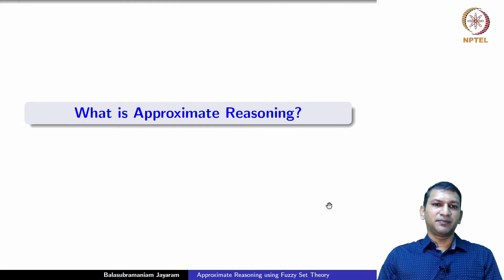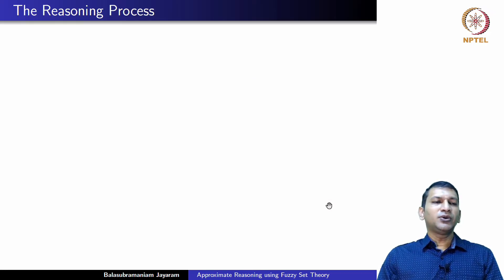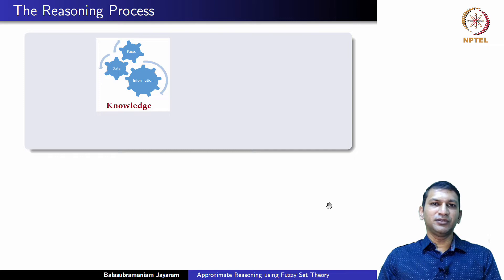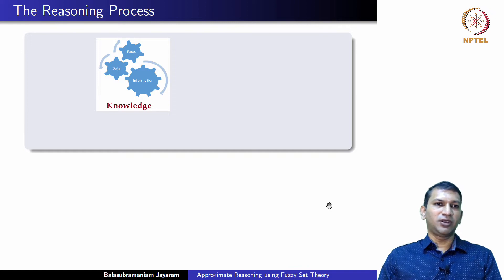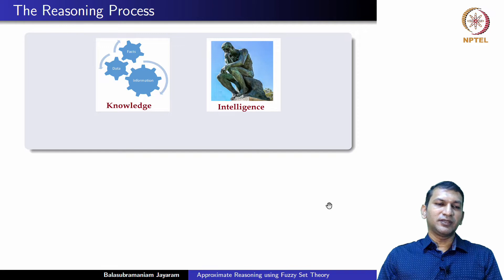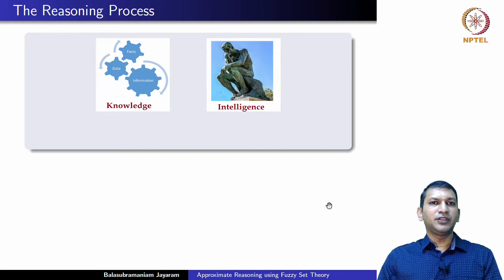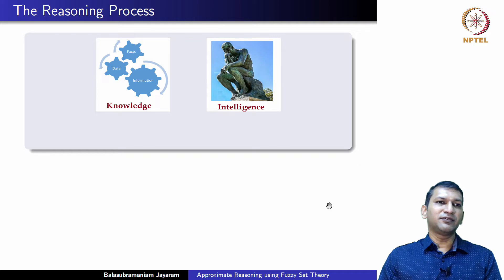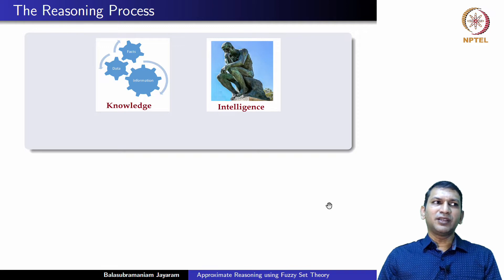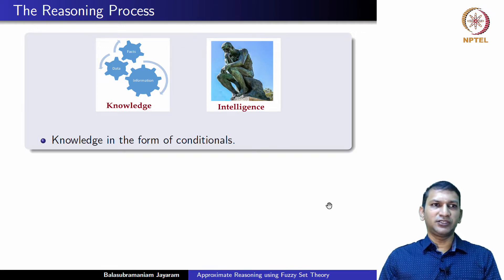What is Approximate Reasoning? Let us look at the reasoning process itself. There are two key components here. The first one is the knowledge which consists of data, facts, and information. We also need an algorithm to process this knowledge and that is what we call the intelligence, which processes this knowledge and tries to infer new facts or reason from existing facts to get some new pieces of information. Knowledge often lends itself to be expressed in the form of conditionals.